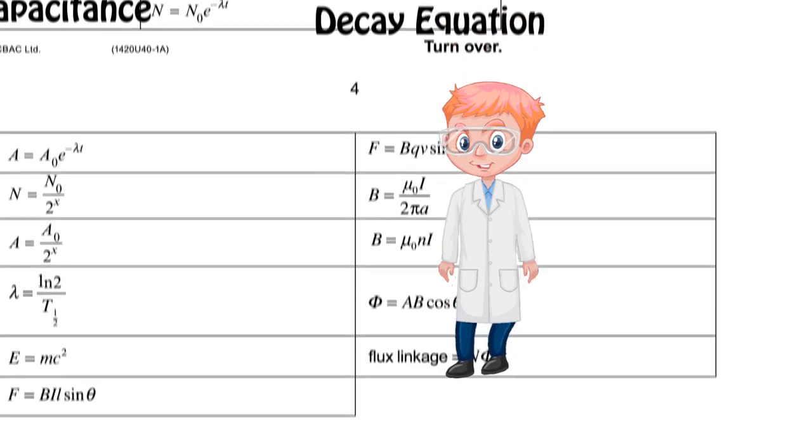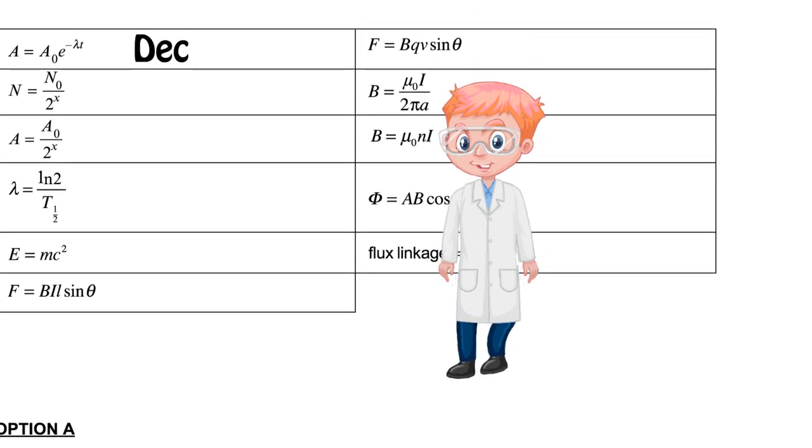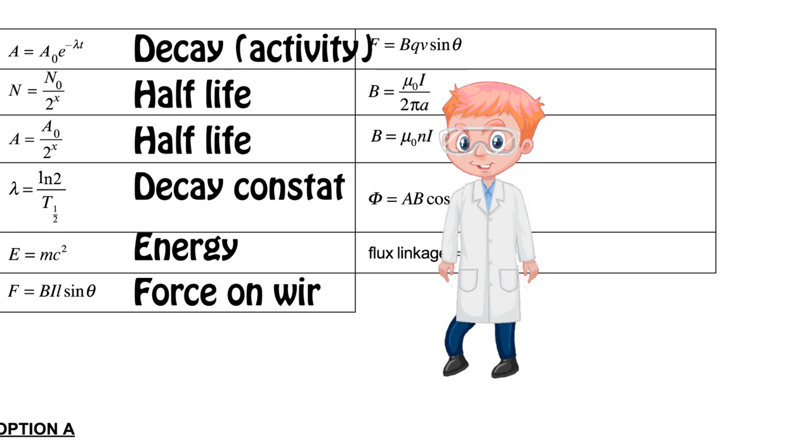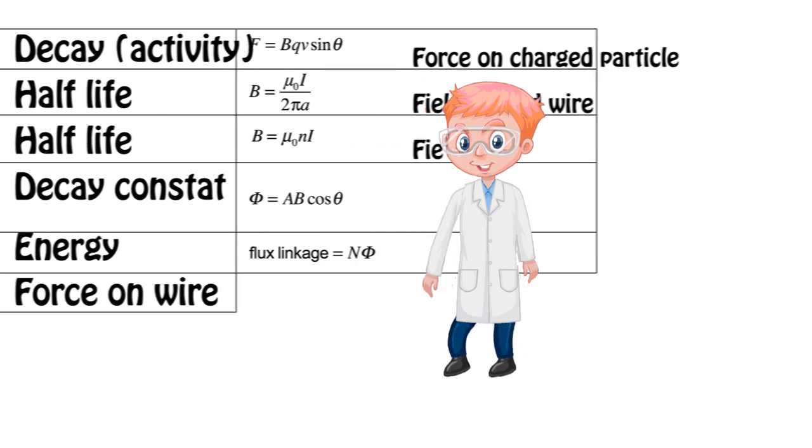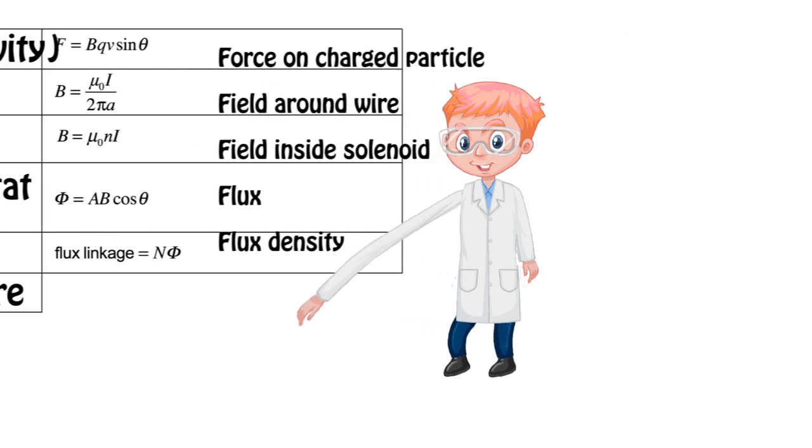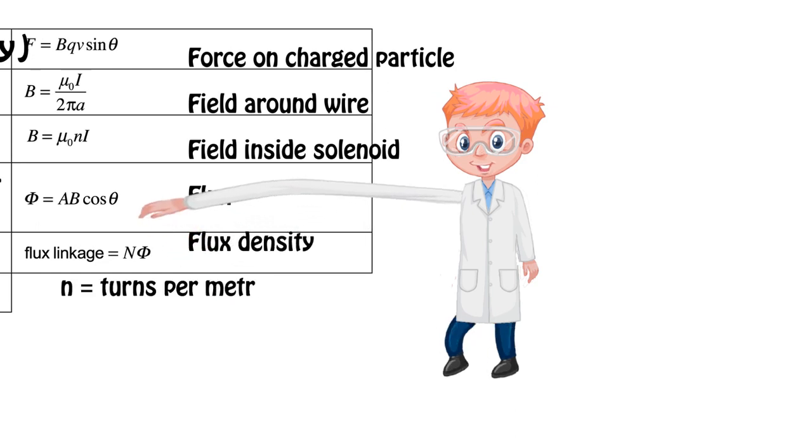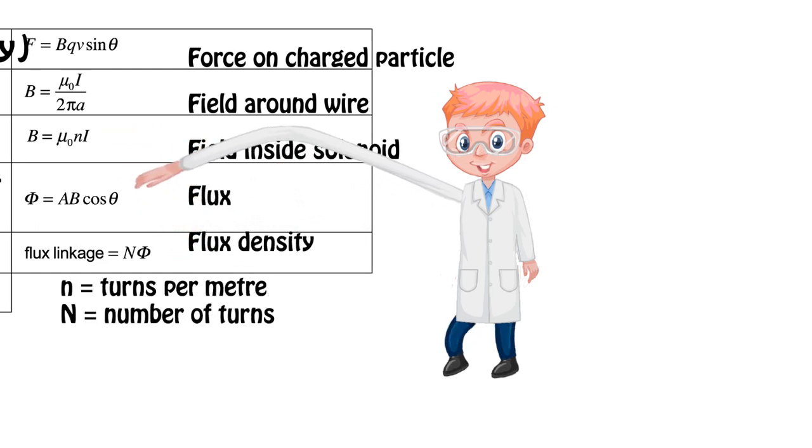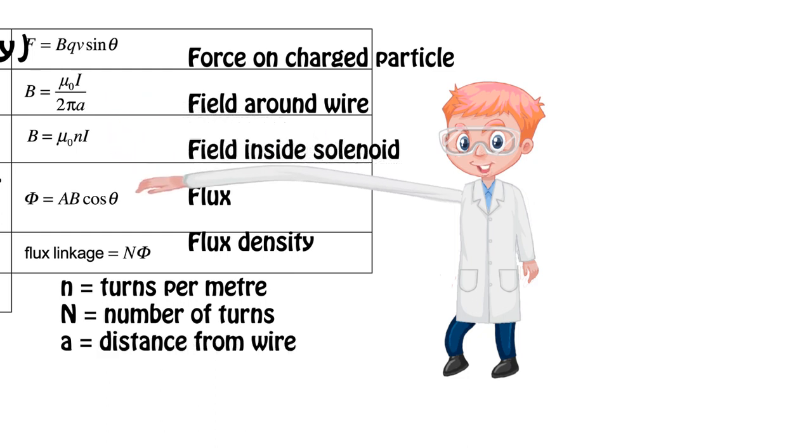Over the next page we've got some more nuclear physics equations and then our final section is our magnetic or B fields. The key thing here is there's a strange use of n and a. Little n means turns per meter. Capital N is the number of coils. Most people would use an R instead of an A here. That is the distance from the wire you are measuring the field from.